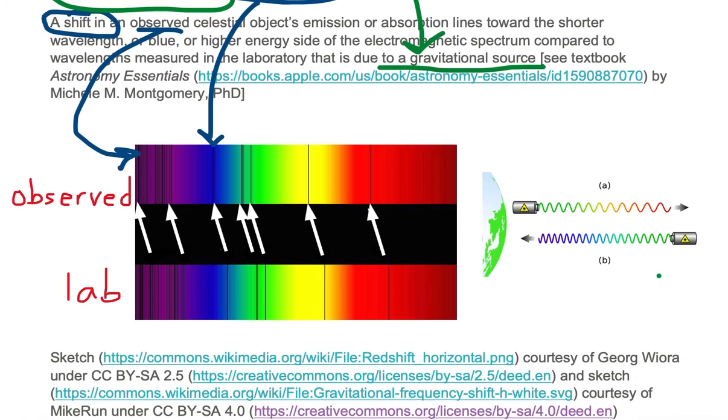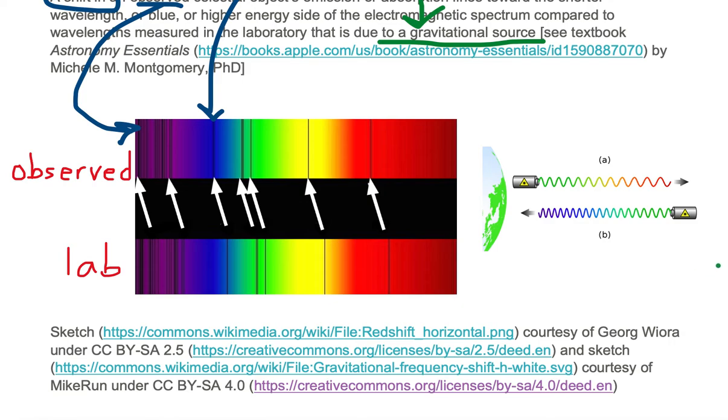Let's take a look at this sketch on the right. Here we have a source that's emitting a green light wave towards planet Earth.